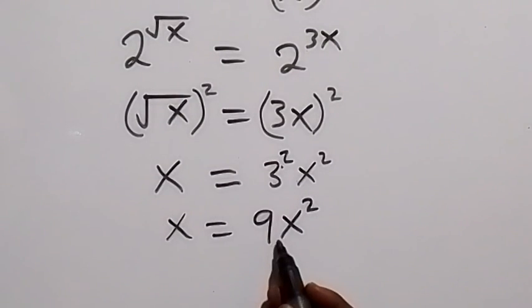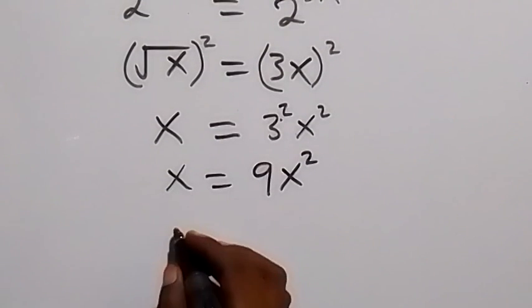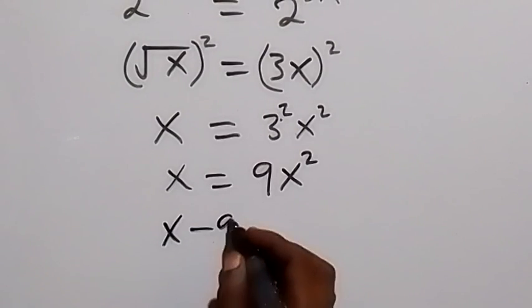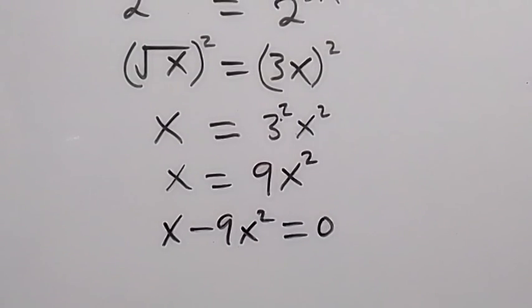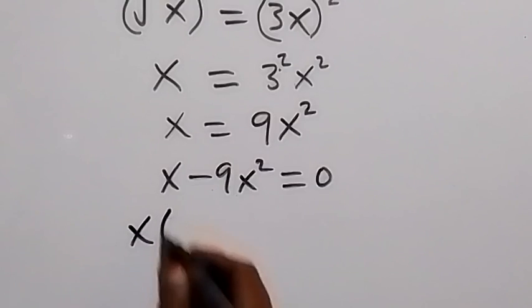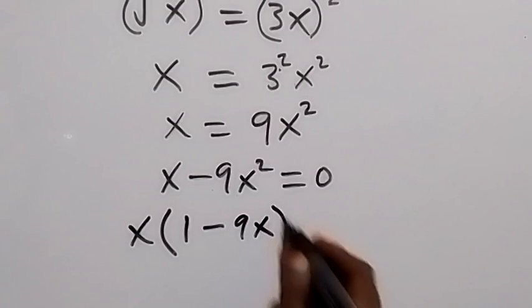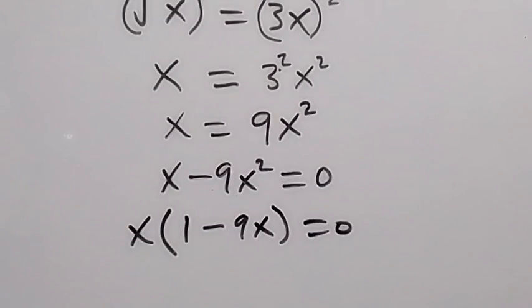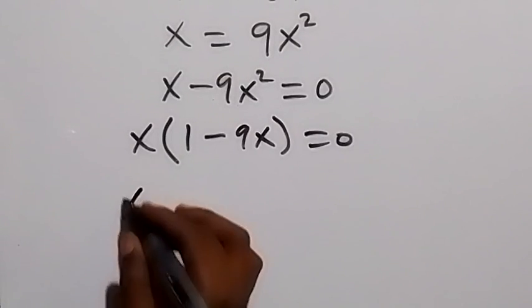Then from here let's take 9x square to this side and we have x minus 9x square will give us 0. Then from here x is common, let's take it out. Then what we have left here is 1 minus 9x which is equal to 0. And from here we have two possible cases.